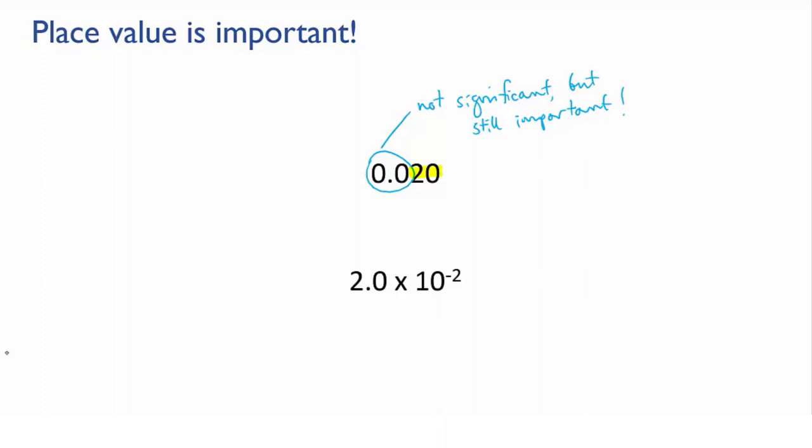But if we don't have those first two zeros, then the two would have the wrong place value, and that would mess everything up.